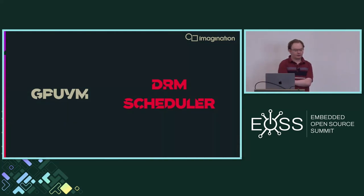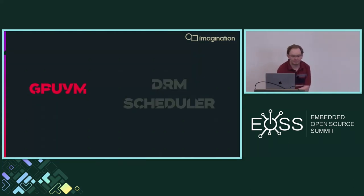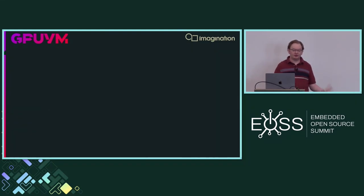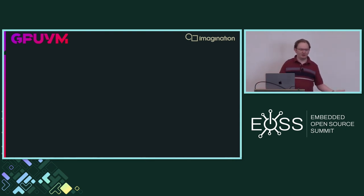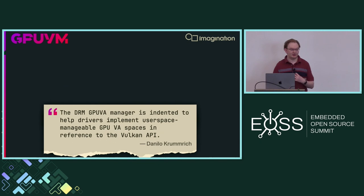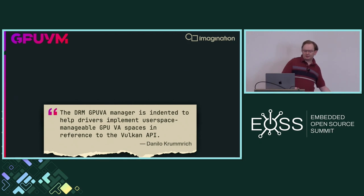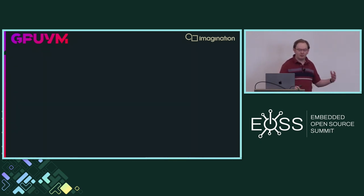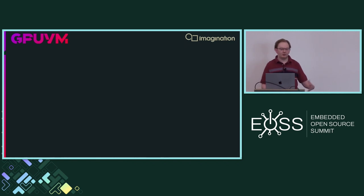Let's switch over now to GPU VM. GPU VM was born as the GPU Virtual Address Manager, shortened to GPU VA Manager, shortened to GPU VA — which was meaningless — so it became GPU VM. The brainchild of Danilo Krumrich and Dave Airlie, both of Red Hat, it is intended to help drivers implement user-space manageable GPU virtual address spaces in reference to the Vulkan API. Much like the DRM scheduler, GPU VM is designed to solve a problem that most if not all DRM drivers encounter: managing the virtual address space of a GPU.